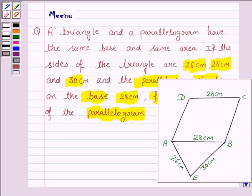We are given that the parallelogram stands on the base 28 cm of the triangle. They have the same base and the same area, and we have to find the height of the parallelogram.